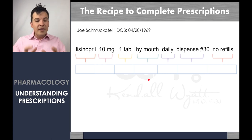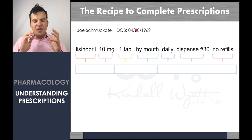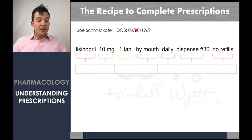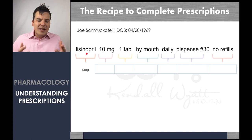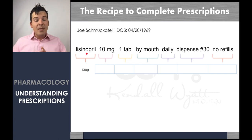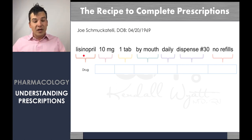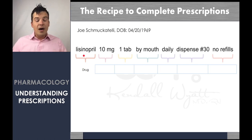You will always have demographic information on the prescription — typically two pieces of identifying information, usually the patient's name and their date of birth. The first component is the drug: what medication are you actually going to give? You can write the generic name or the trade name. If you write a brand name and want the patient to receive the brand name specifically, you have to indicate that explicitly, because by default medications are always filled as the generic drug.